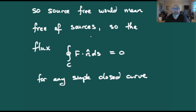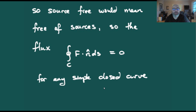Source-free means we are free of sources, so if we are free of sources then the amount entering the curve equals the amount leaving. The flux integral over a simple closed curve — the line integral of f·n ds — should give us zero. So our flux should be zero for any simple closed curve, similar to conservative vector fields where the line integral over any simple closed curve is zero when path independent.